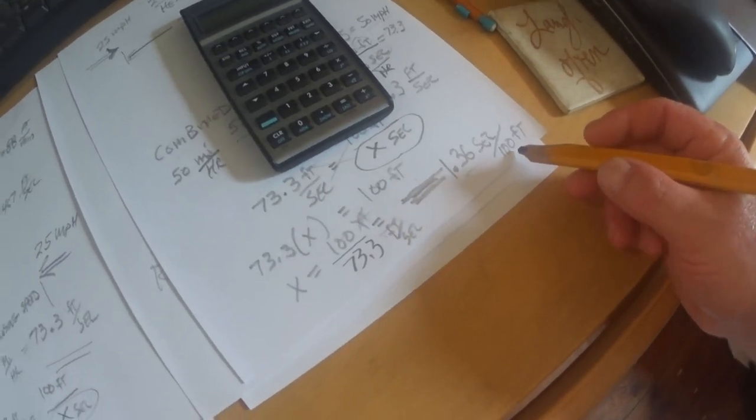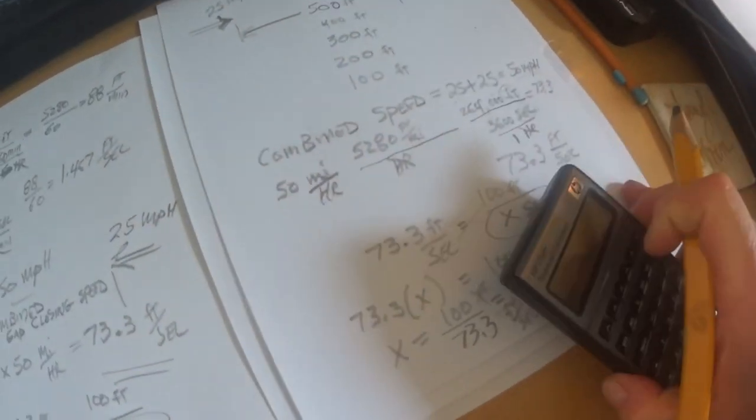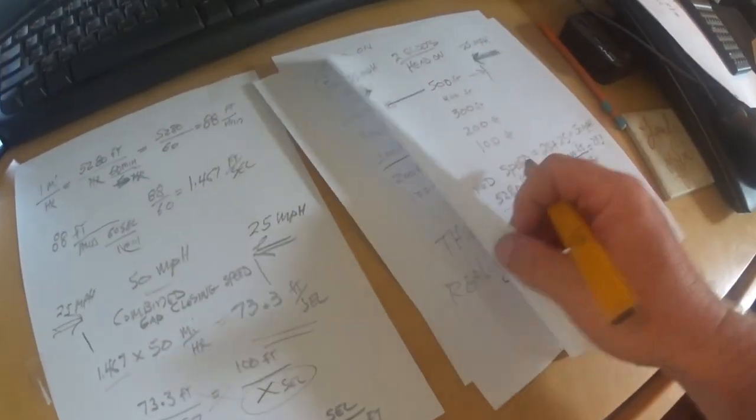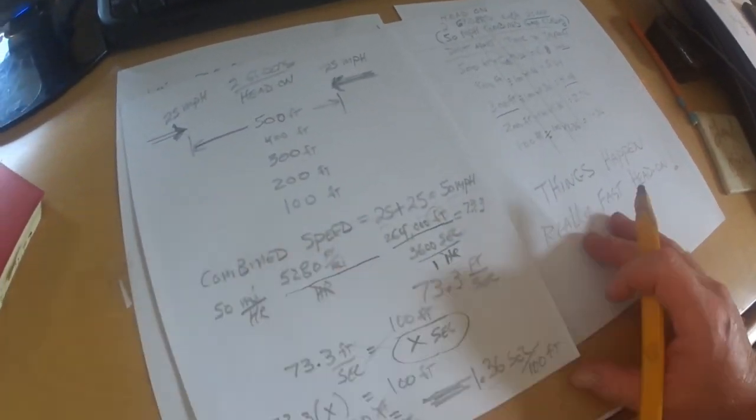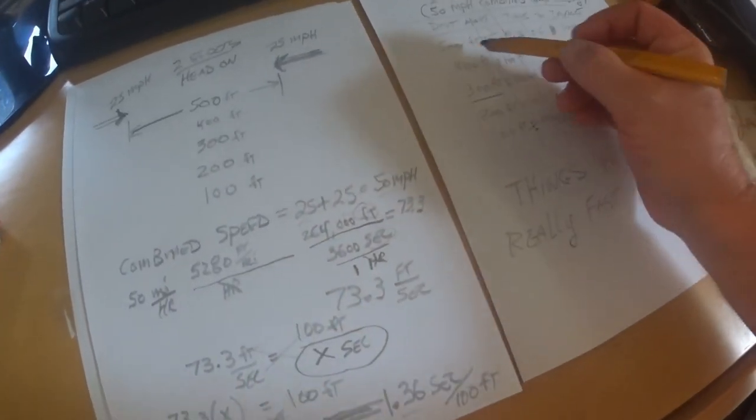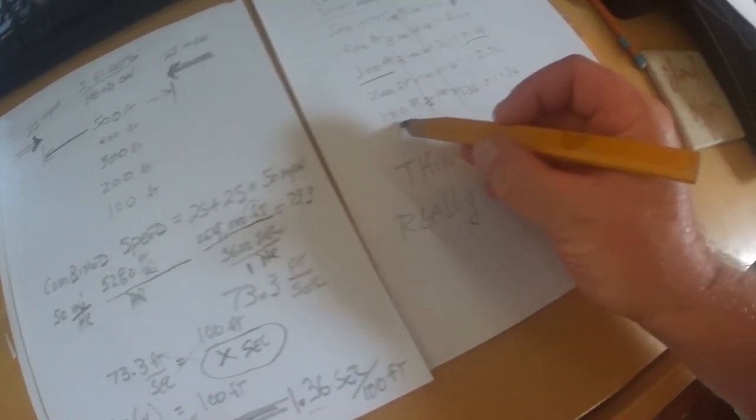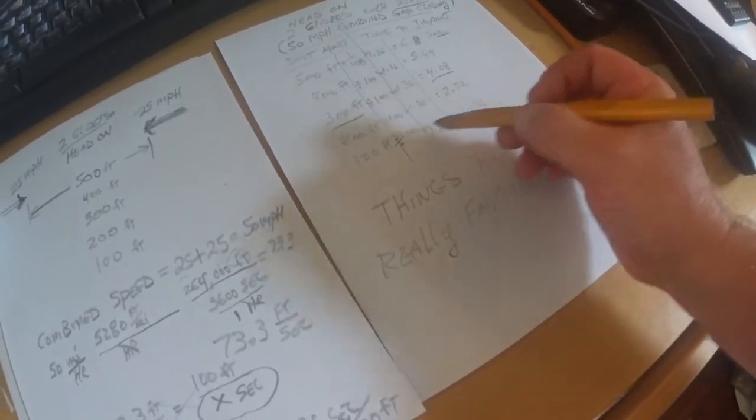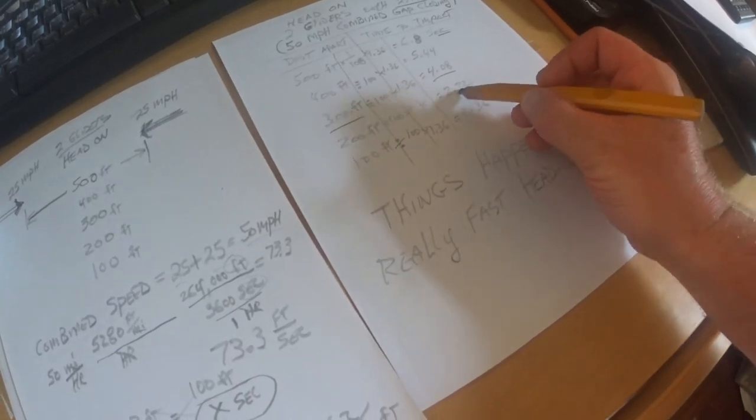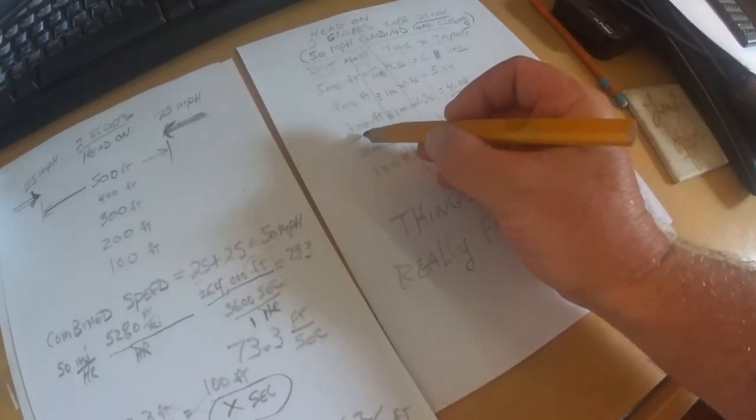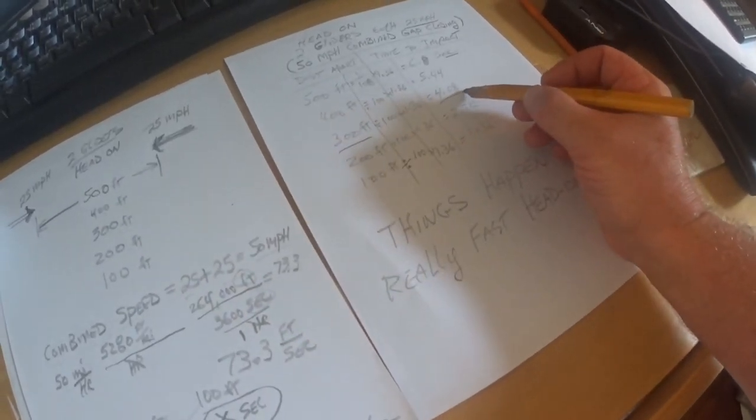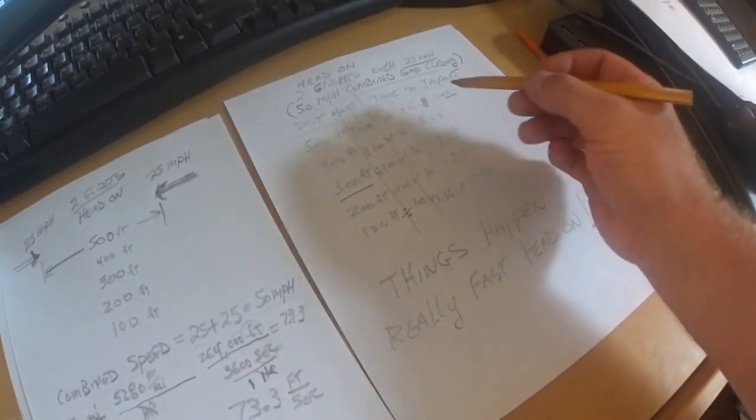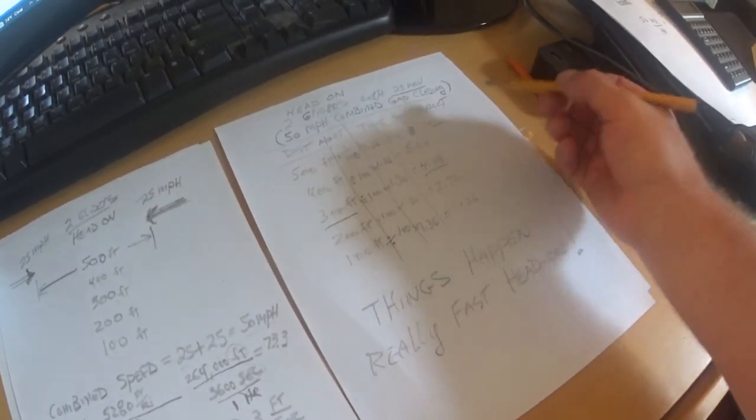Back to the table thing that I developed earlier. There it is. So you can see 100 feet, it's just 1.3 seconds. 200 feet, 2.72 seconds to close the gap. 300 feet, 4.08 seconds. 400, 5.44 seconds. 500, 6.8 seconds.